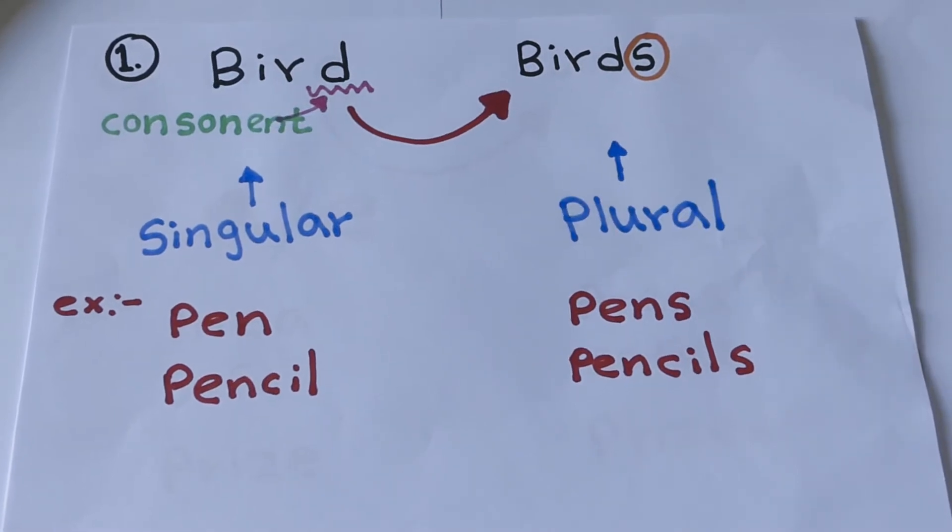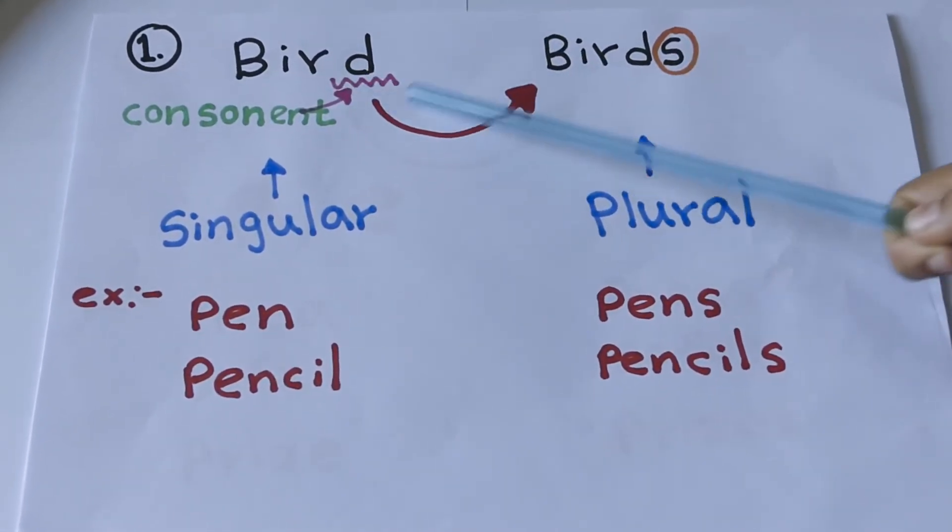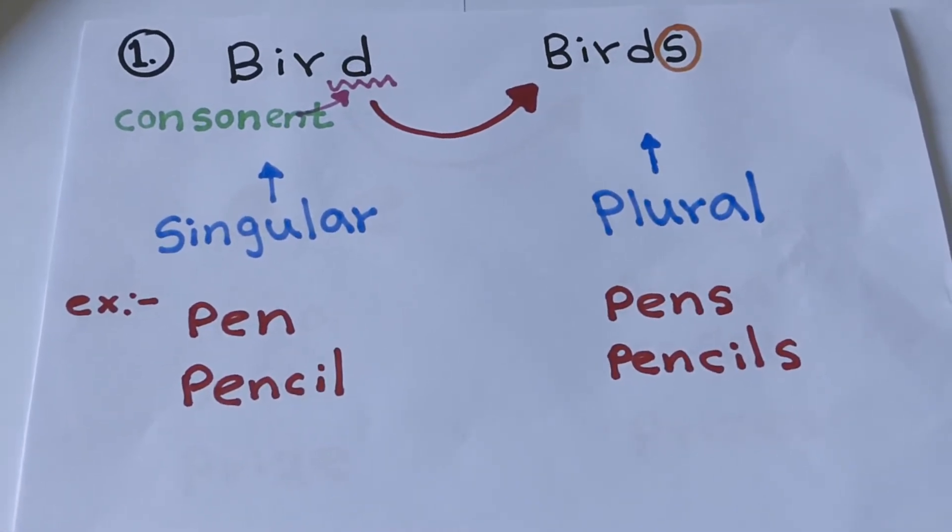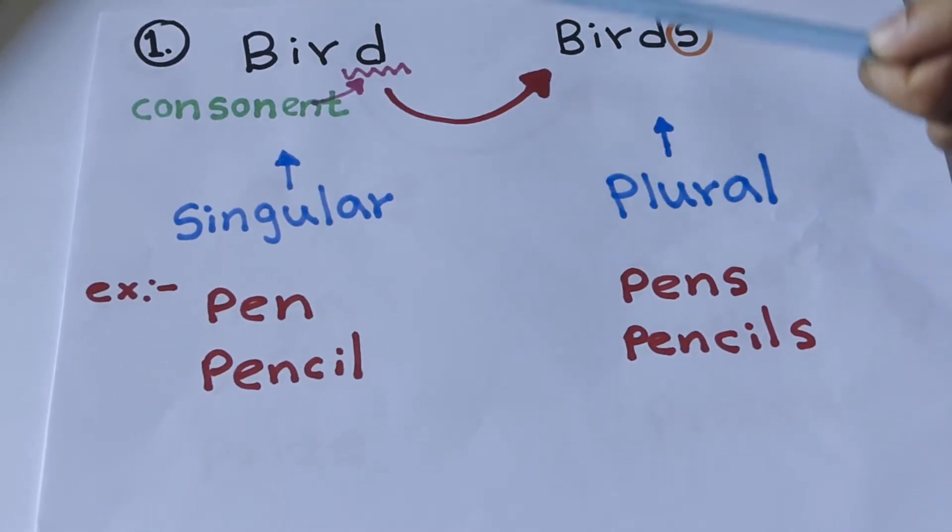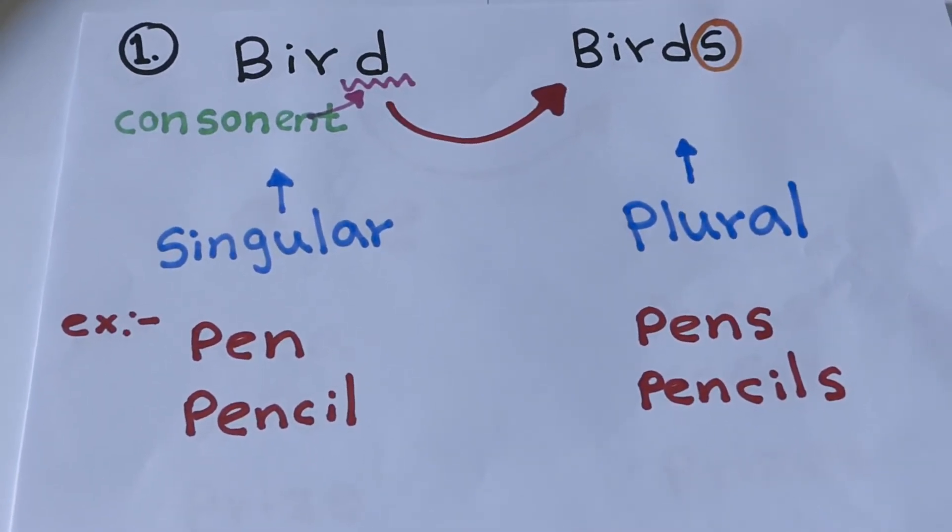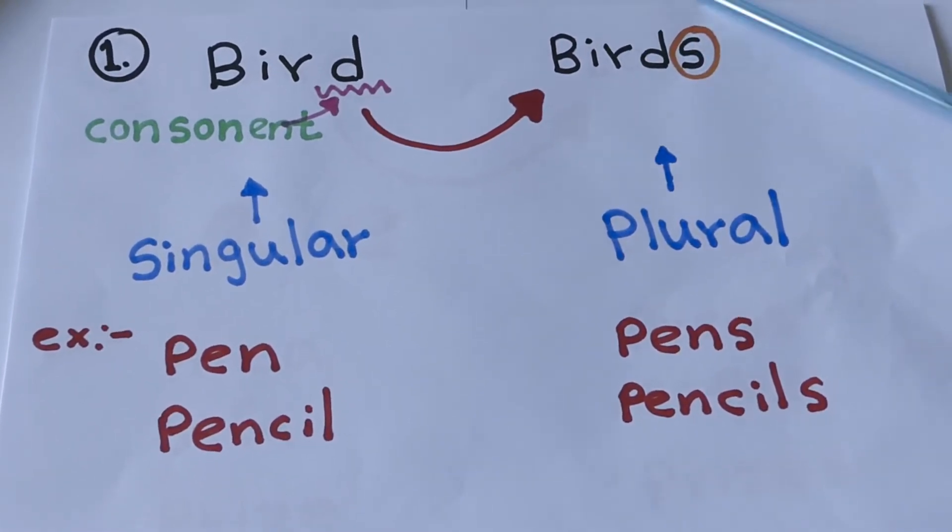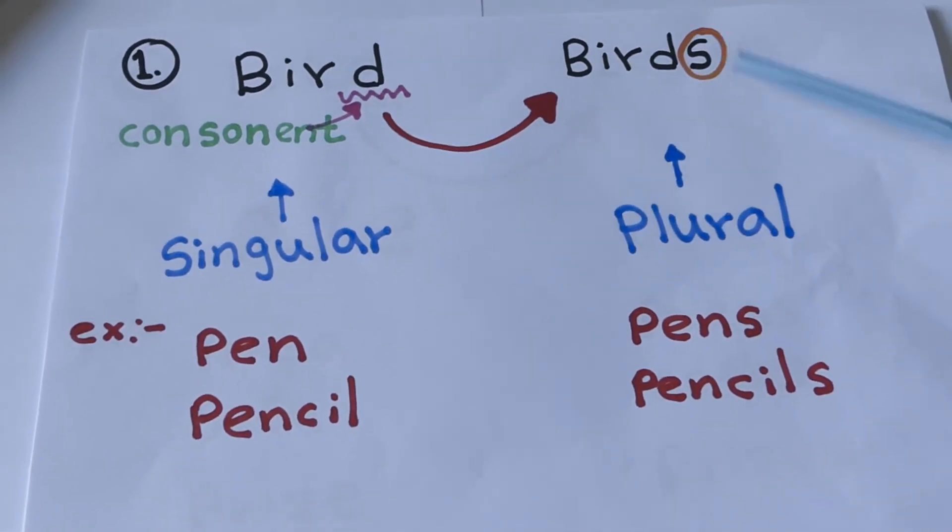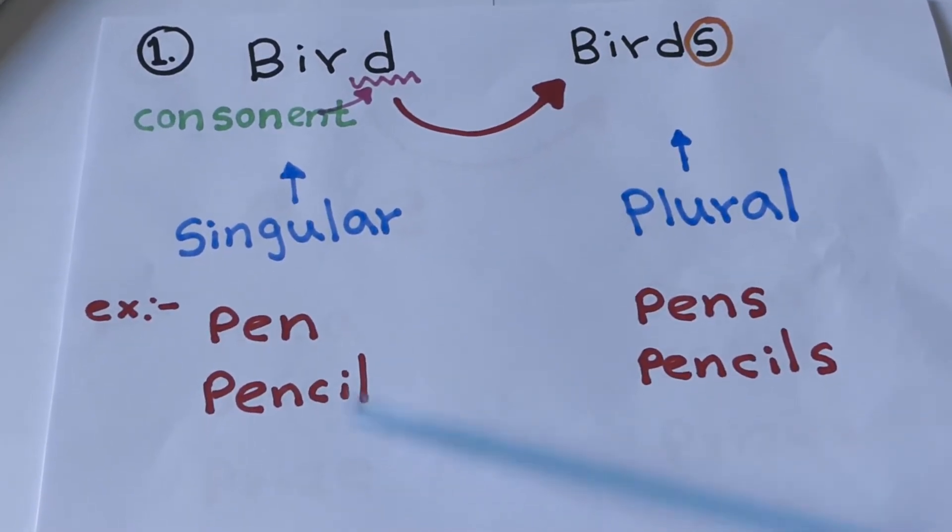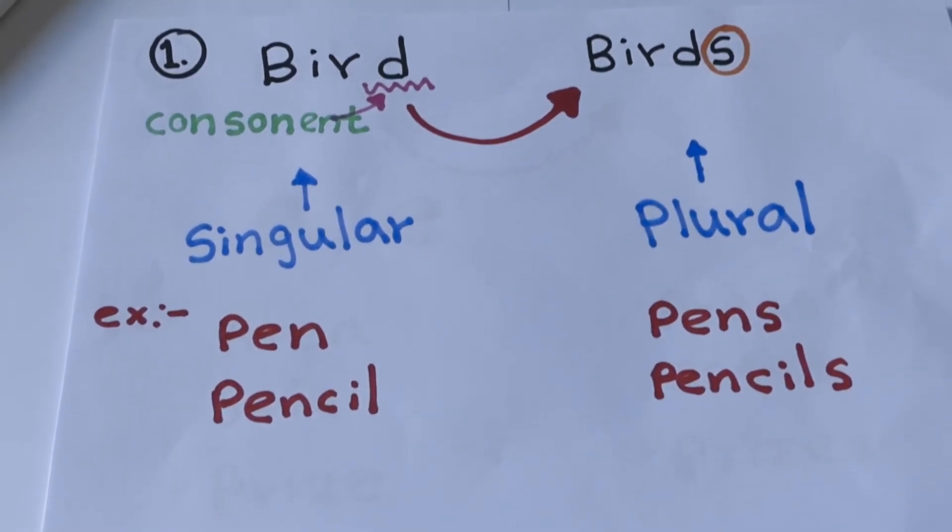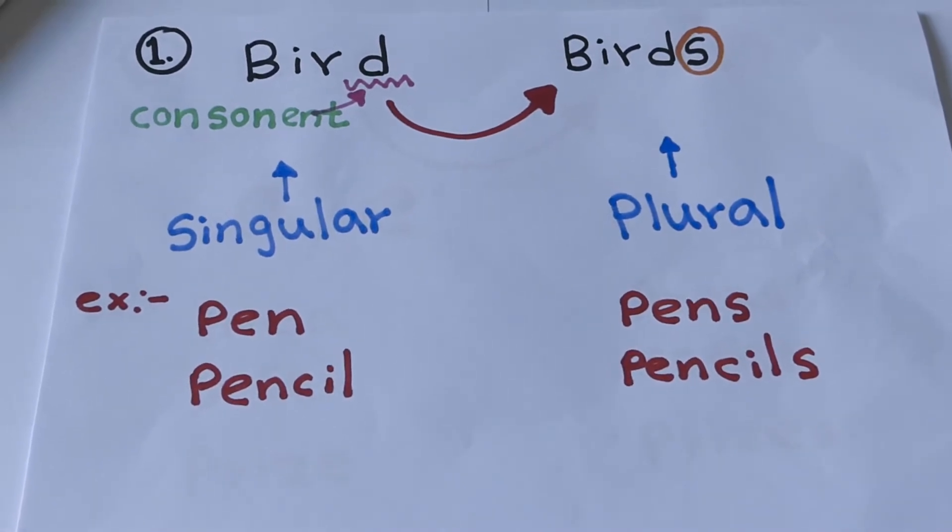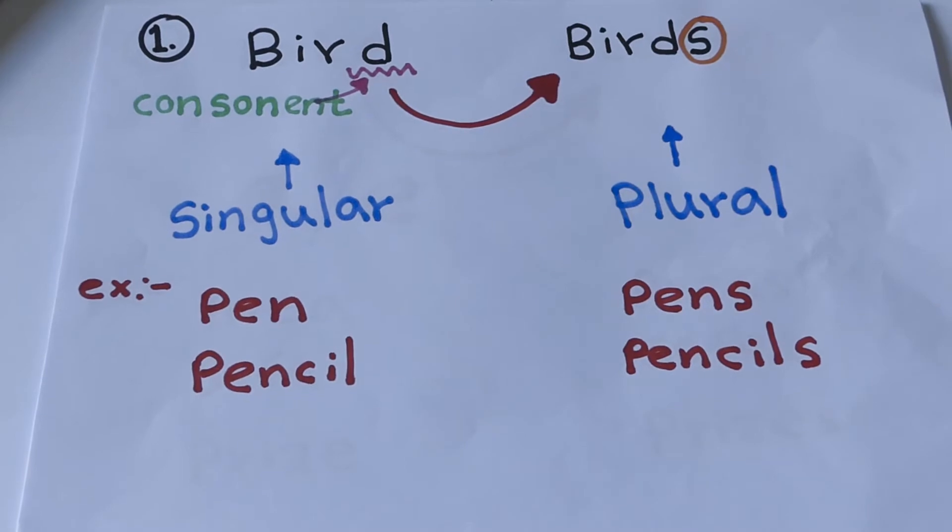First rule: the last letter of the word finishes with a consonant. Now we know what are the consonant letters in the alphabet. Without vowels, we consider the letters consonant letters. The last letter of the word finishes with a consonant, then we have to convert to plural by adding S at the end of the word. Bird, birds. Examples: pen, pens, pencil, pencils. N and L are consonant letters. That's why we add S at the end of the word. Understood? Okay, let's see the second rule.